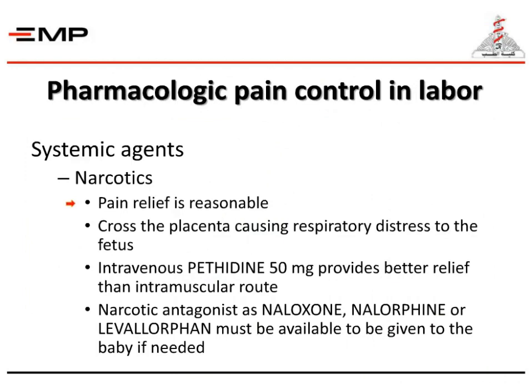For pharmacological pain control, we have systemic agents. The most important are the narcotics. Pain relief is reasonable with narcotics, but they can cross the placenta, causing respiratory distress to the baby.